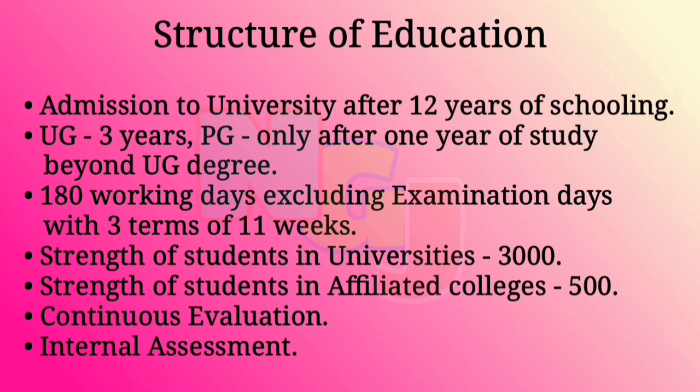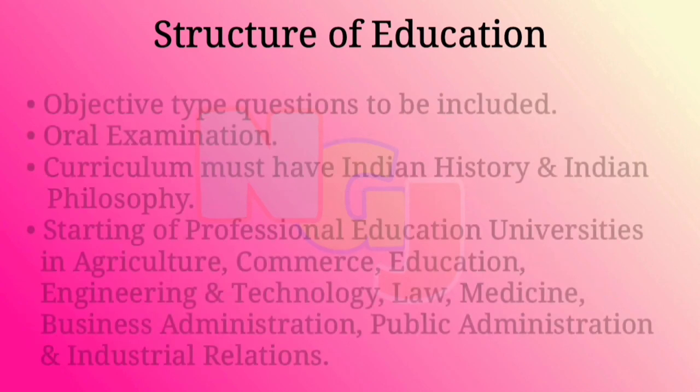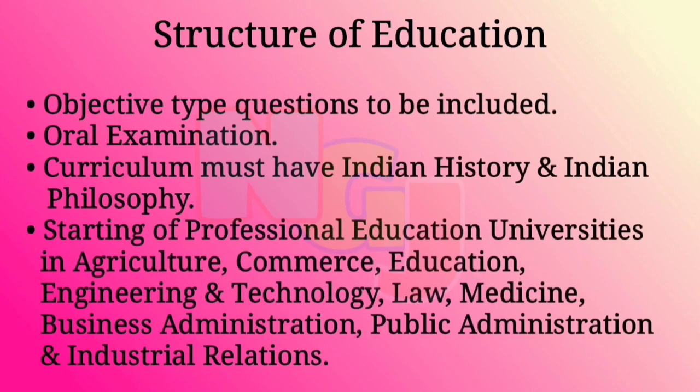They recommended that students in university must number 3,000 and students in affiliated colleges must be 500. They also recommended continuous evaluation and wanted internal assessment to be introduced. They suggested the inclusion of objective type questions as well as oral examination.